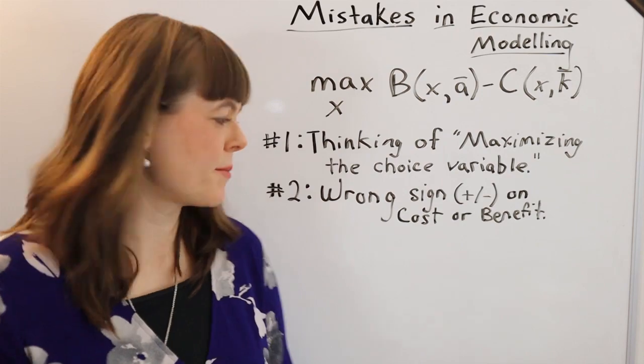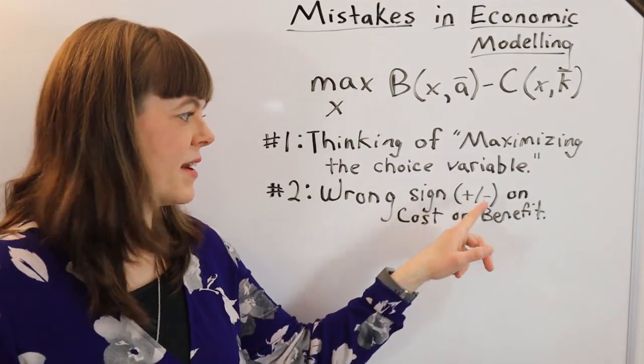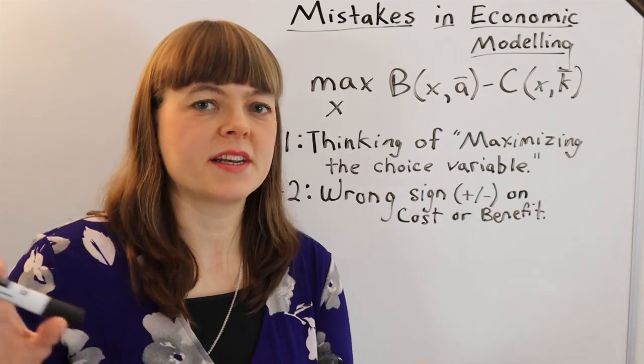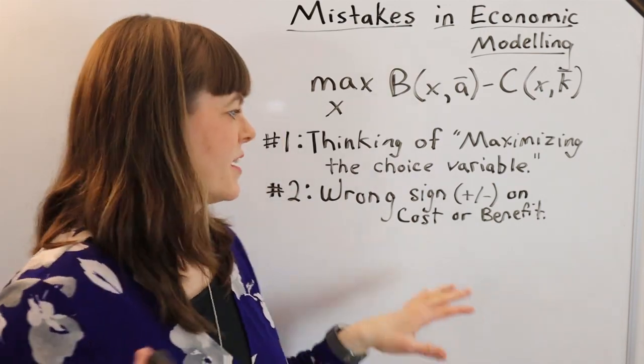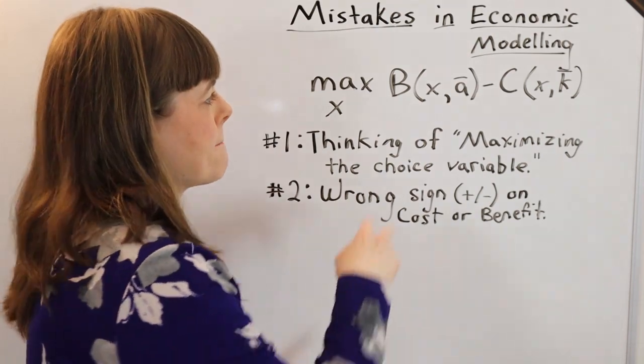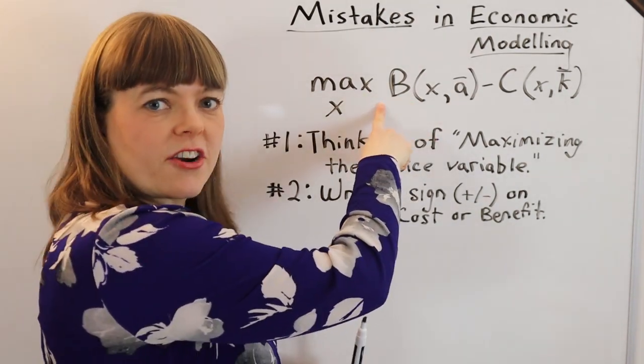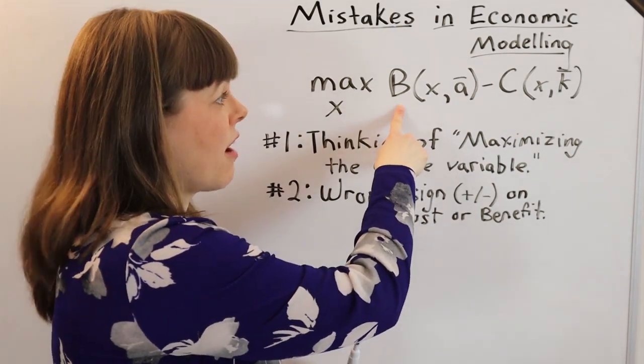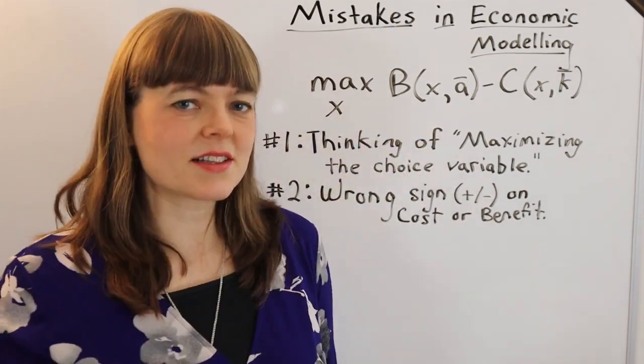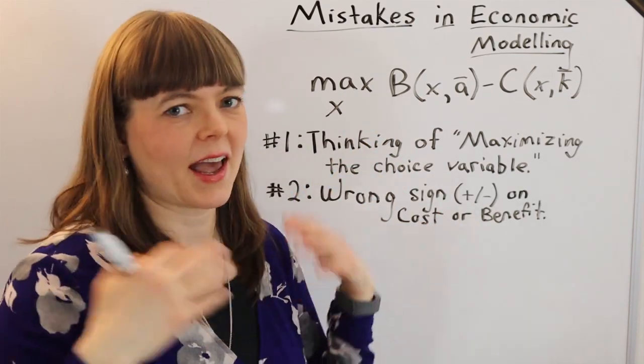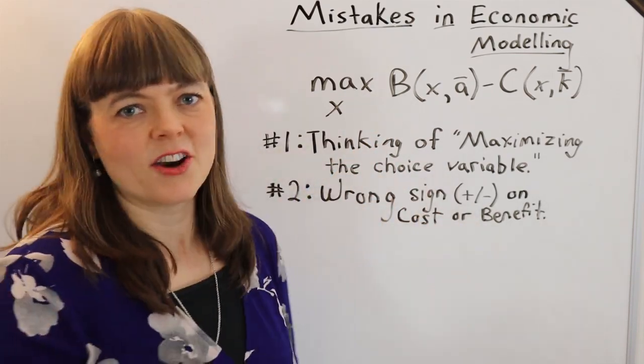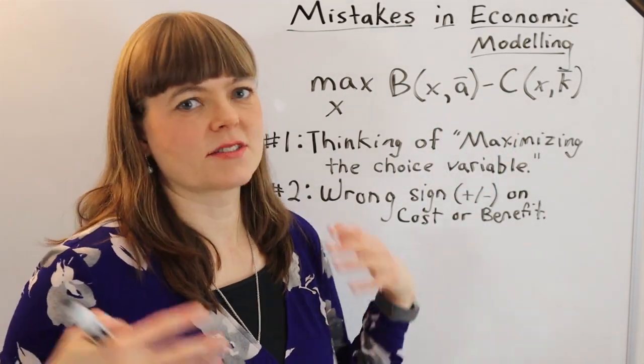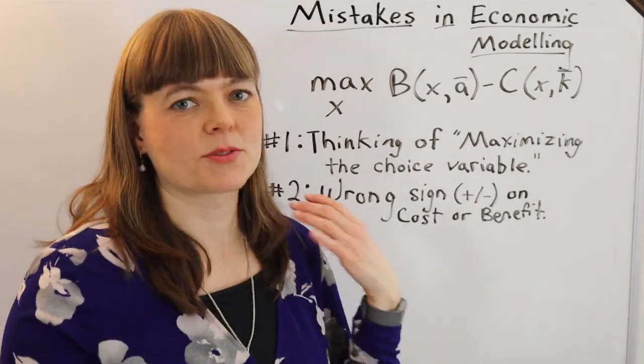The second common mistake is that you have the wrong sign, plus or minus, on a cost or benefit. And I think you'll probably need to watch the video I do on this to fully understand that. But the basic idea is the sign here is just going to determine, do you like this or not like it? So classically we have a benefit. That's a wonderful thing like happiness or money earned or whatever. And we have a cost that we don't like, such as money we have to pay or things we have to give up.